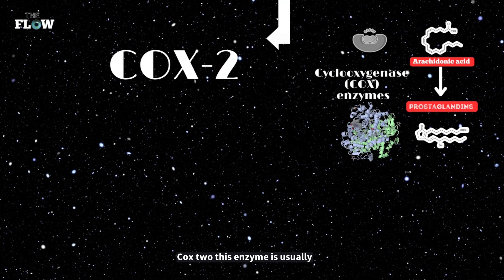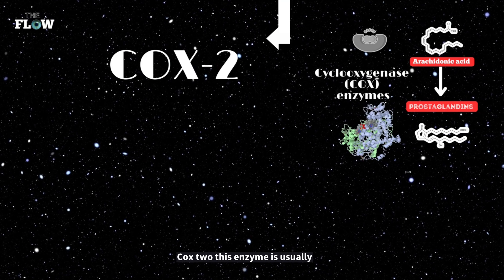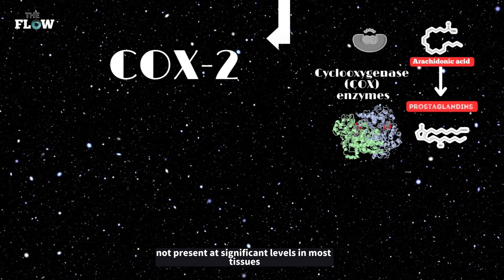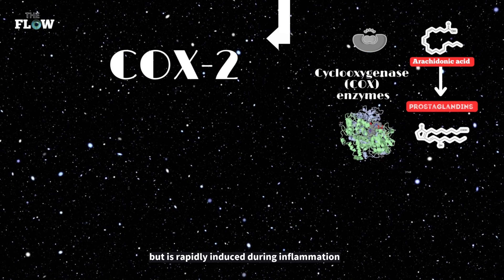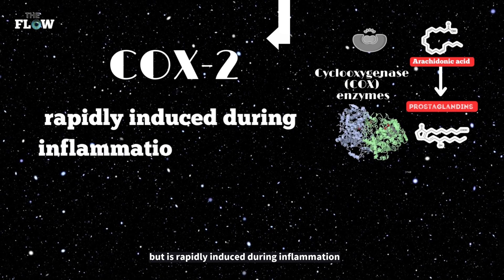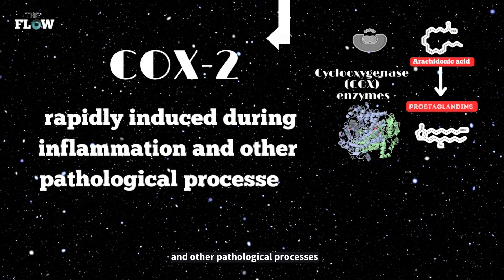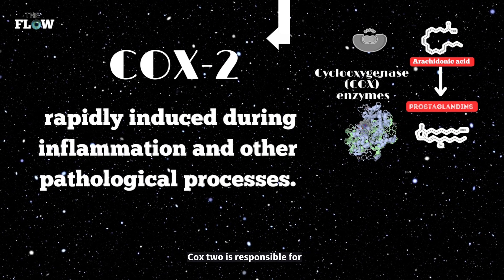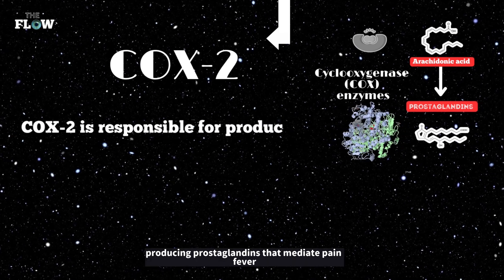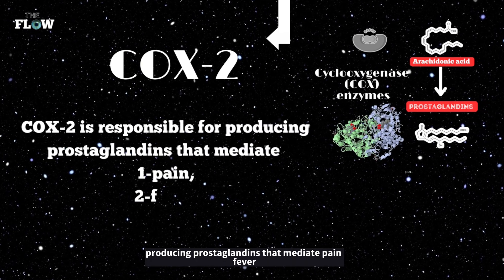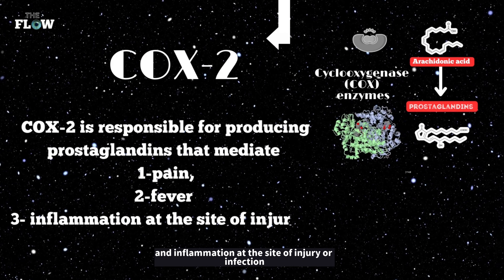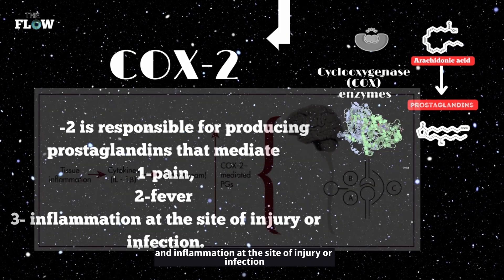COX-2: this enzyme is usually not present at significant levels in most tissues, but is rapidly induced during inflammation and other pathological processes. COX-2 is responsible for producing prostaglandins that mediate pain, fever, and inflammation at the site of injury or infection.